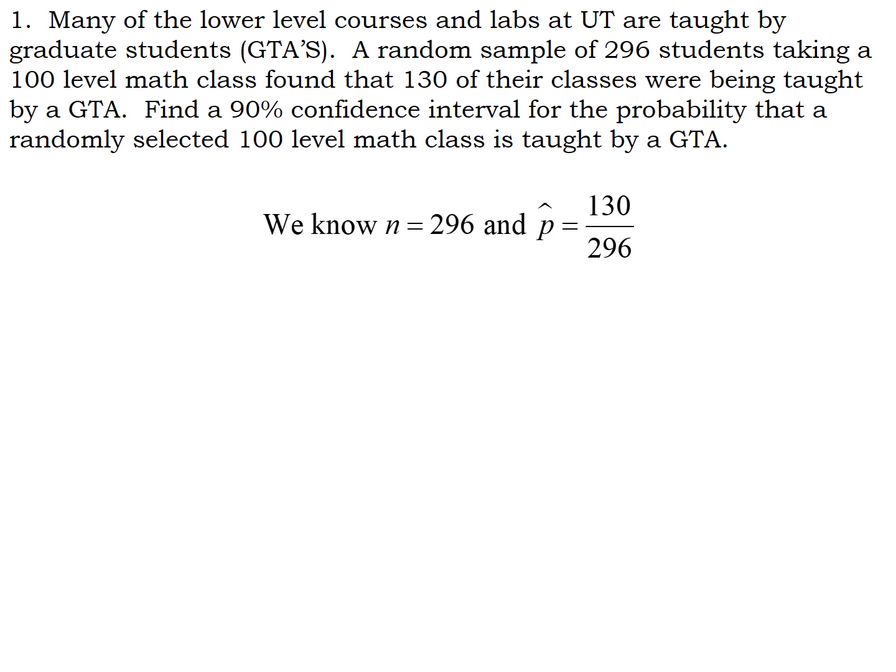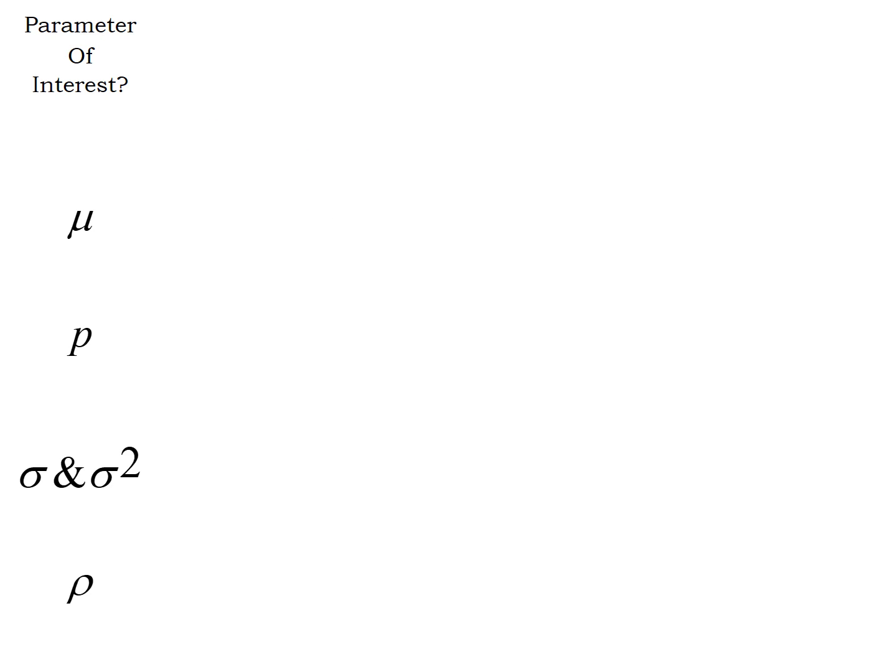Speaking of formulas, we need to pick the right formula to use. So our parameter of interest is P, the population proportion. Whether or not sigma is known or the population is normally distributed, those two conditions don't really apply here in this scenario. We do have a sample size requirement, but notice it's not the bigger than 30.